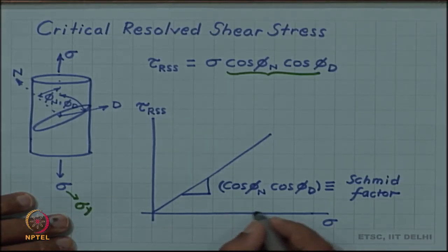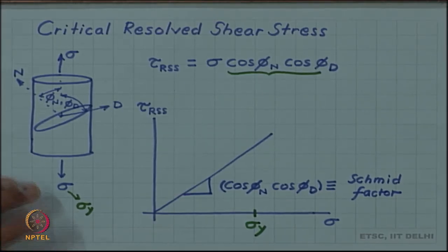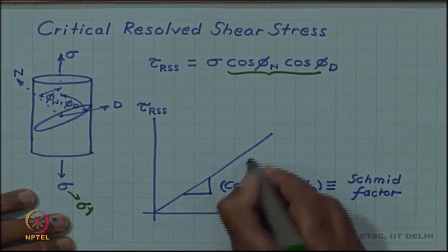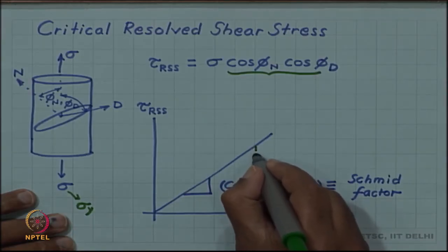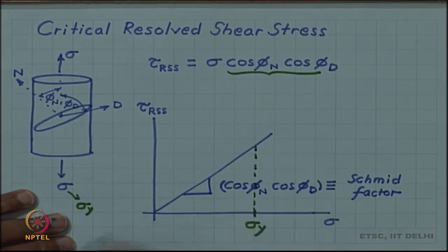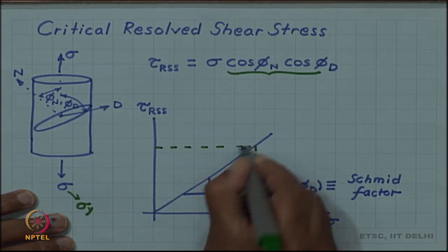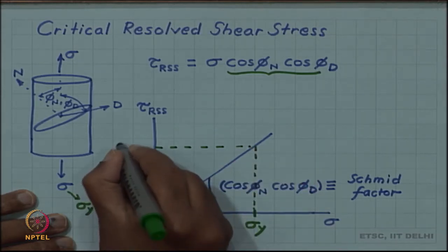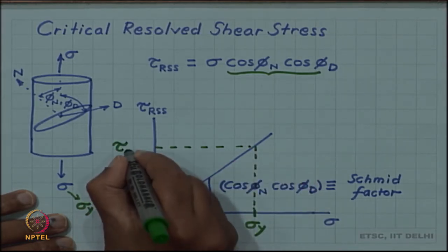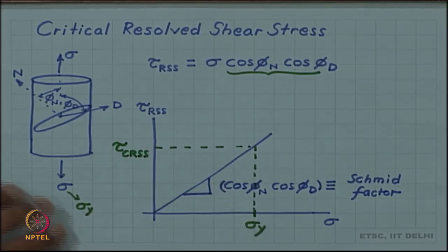Let us indicate on the tensile axis a critical value called the yield stress at which yielding begins. Corresponding to that yield stress, the value of resolved shear stress at that point will be called the critical resolved shear stress, or CRSS.